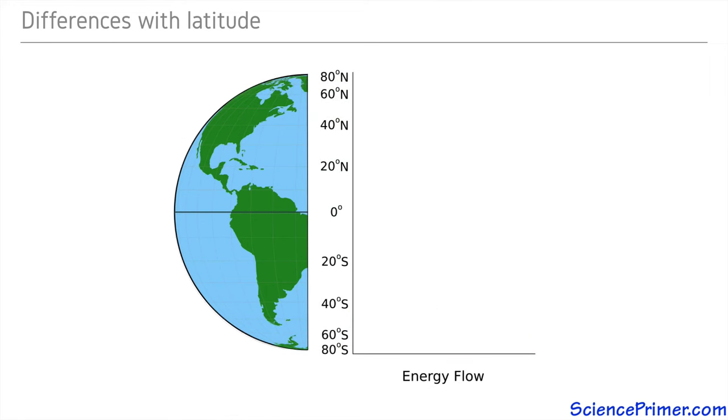This can be represented graphically to show how energy flows to and from the atmosphere vary with latitude. The amount of energy absorbed by the Earth and then radiated to the atmosphere peaks at the equator and falls with increasing latitude.